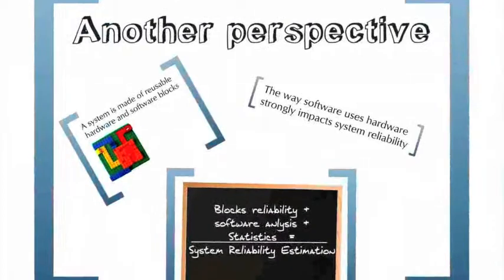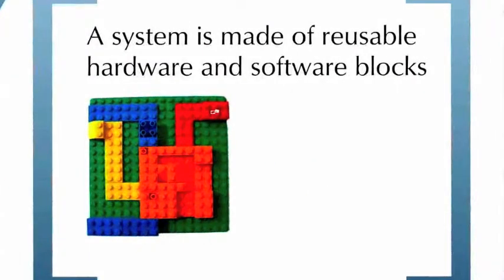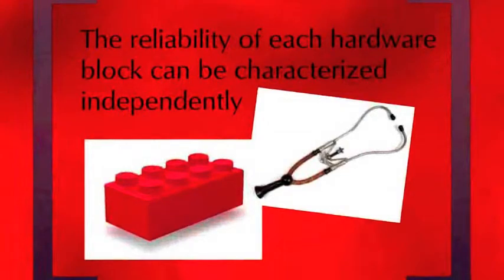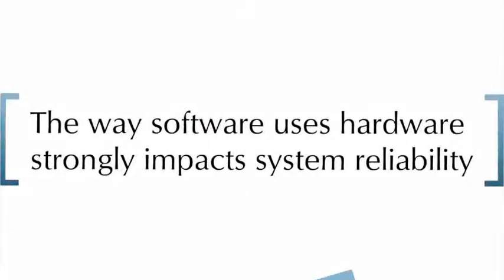So we think there is another way to solve this problem. Let's start from two facts. One, systems are too complex — we need to think about them as an interconnection of reusable hardware and software blocks. It is a lot easier to profile the reliability of each individual component of the system. Two, the way hardware blocks are used depends mainly on the software running on them. Therefore, we don't care if a system has a hardware fault unless the fault manifests itself in the software outcome. This also means that instead of protecting the whole system from faults, it may only be necessary to protect specific parts.